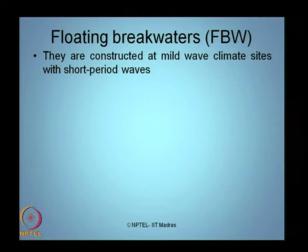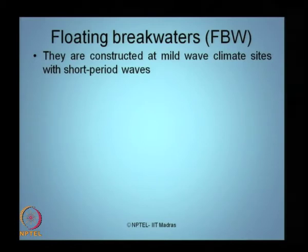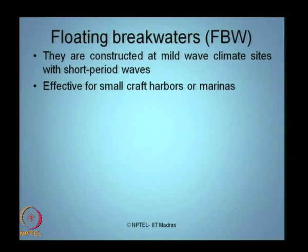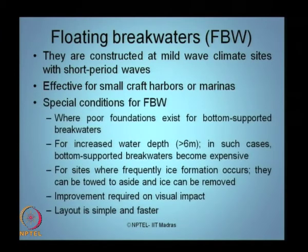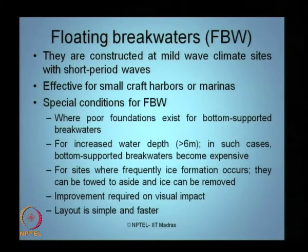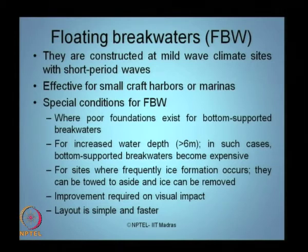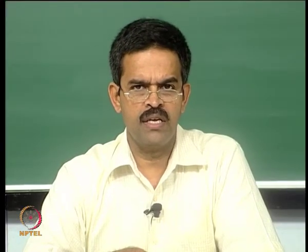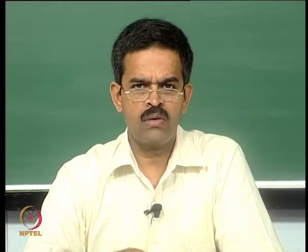The next type of coastal structure is a floating breakwater, abbreviated FBW. These breakwaters are constructed at mild wave climate sites where short period waves exist. They are effective for very small craft harbors or marinas. Site-specific conditions where floating breakwaters are recommended include: poor foundations where bottom-supported breakwaters cannot be constructed, water depths exceeding 6 meters where bottom-supported breakwaters become very expensive, and sites where frequent ice formation occurs — a floating breakwater can be towed and accumulated ice removed easily.